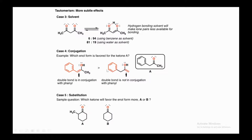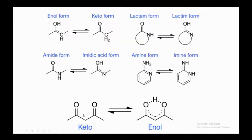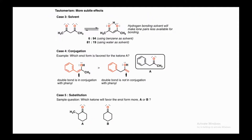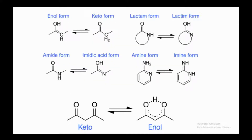The fourth factor is conjugation. For structure A in keto form, one enol form places the double bond in conjugation with the phenyl ring, while the other does not. The fifth factor is substitution. Questions for viewers: which enol form is favored for structure A due to conjugation, and which ketone — A or B — will favor the enol form more due to substitution? Please answer in the comments below.